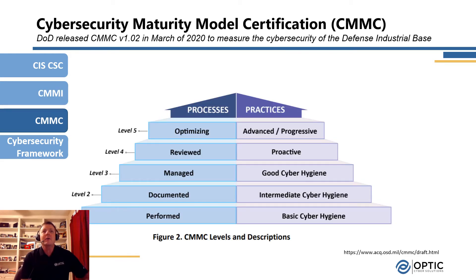Another model very similar to CMMI's approach is the Cyber Security Maturity Model Certification, or CMMC. CMMC is an evolving cyber maturity capability introduced earlier this year, revised to version 1.02 in March. As seen in figure two of CMMC, they clearly delineate process maturity and practice maturity. Just like CMMI, CMMC uses a five-point scale — starting at level one for performing capabilities, through level three where they are being managed, and up to level five where they are being optimized.